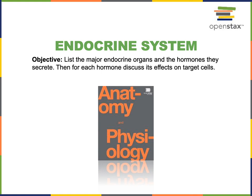This video will cover the second part of the following objective from the endocrine system: list the major endocrine organs and the hormones they secrete, then for each hormone, discuss its effects on target cells.